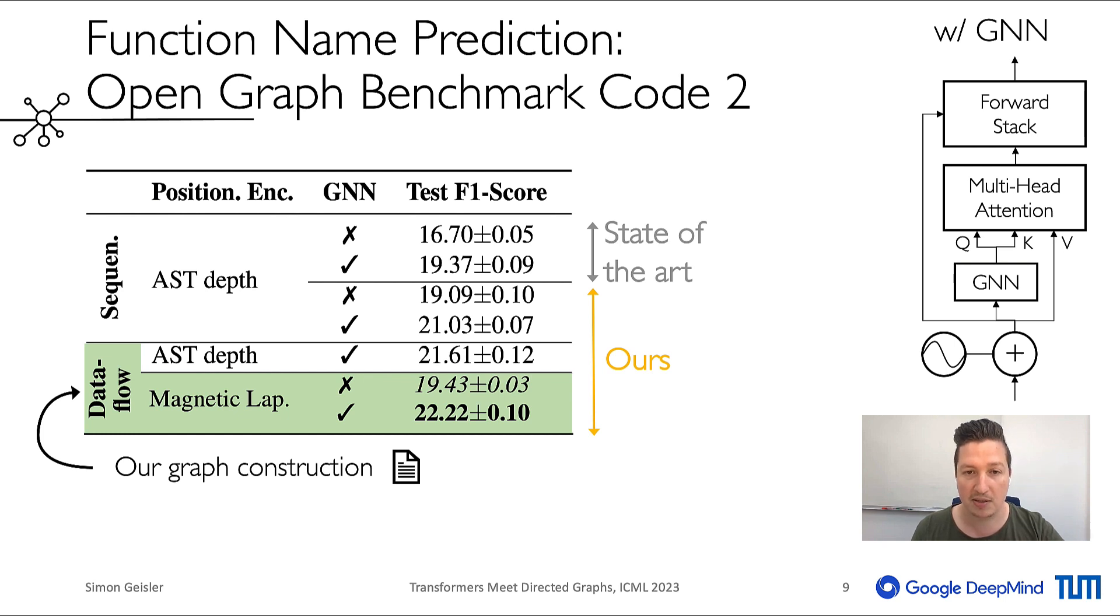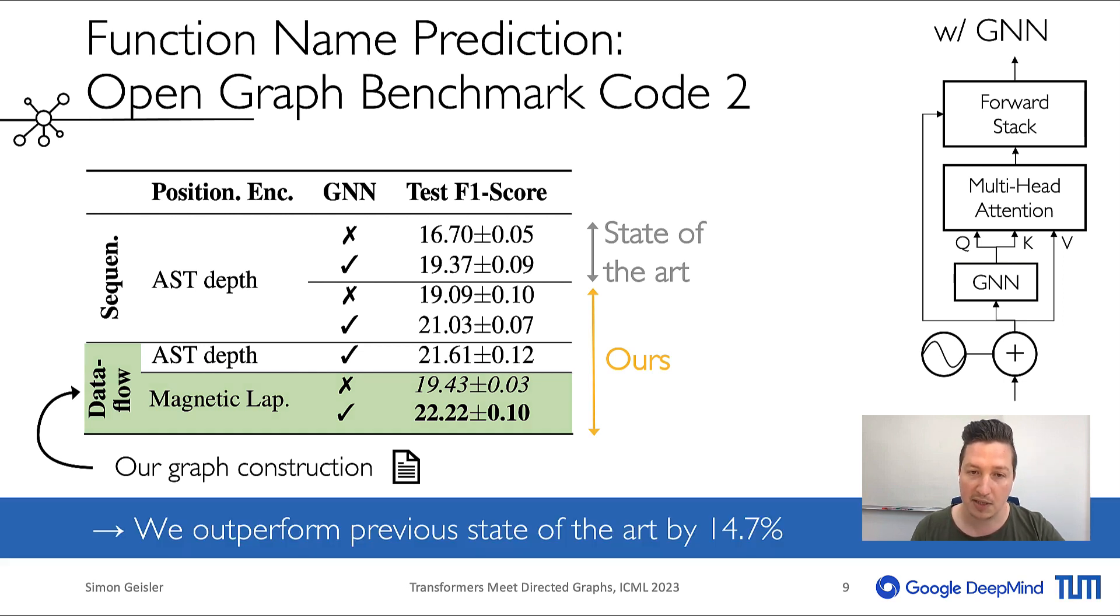Here we add our positional encodings to the prior state of the art, called Structure-Aware Transformer, which is a hybrid GNN transformer architecture. With some improvements and our graph construction, we outperformed the Structure-Aware Transformer by roughly 15%. Note that our model is additionally invariant with respect to certain meaningless perturbations of the source code.